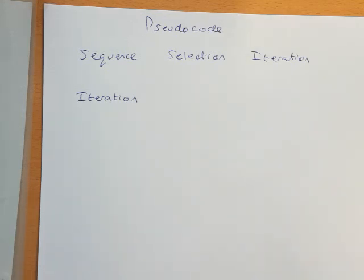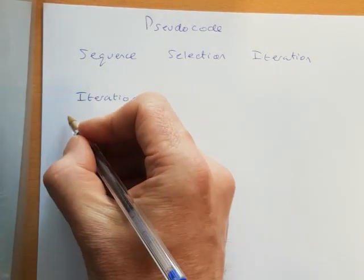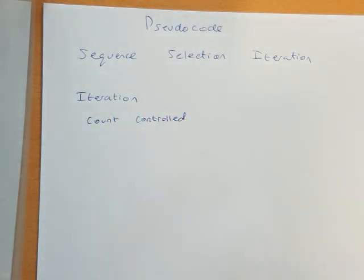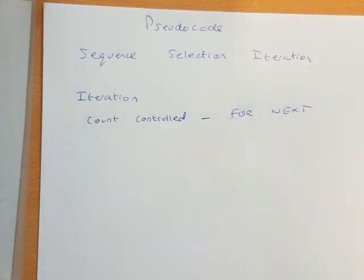First method that we're going to look at is what we call a count-controlled loop. And it might be, if you're asked about this in a test, it might be presented to you as a count-controlled loop, and that's a fancy way of saying we know how many times we want the loop to run. And if we know how many times we want the loop to run, we need to use a for loop, or for next. Count-controlled for next loop. So just associate those together.